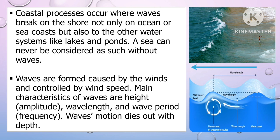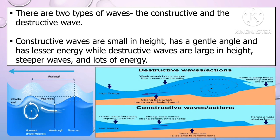Waves' motion dies out with depth. There are two types of waves: the constructive and destructive wave. Constructive waves are small in height, have a gentle angle, and have lesser energy, while destructive waves are large in height, steeper, and have lots of energy.